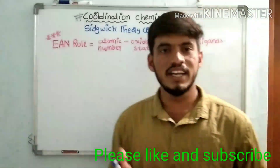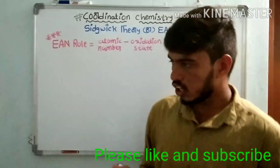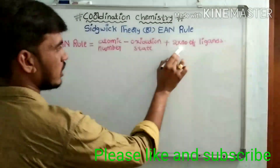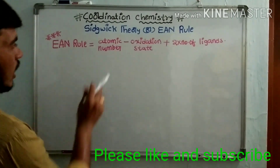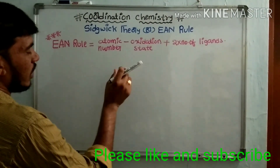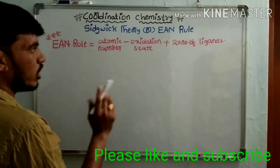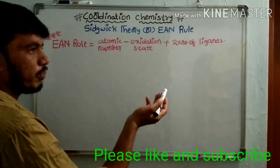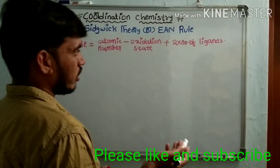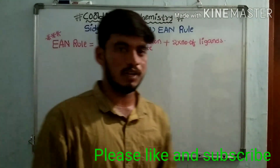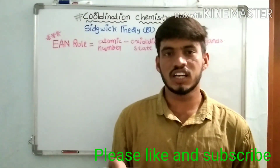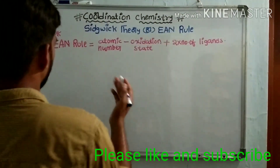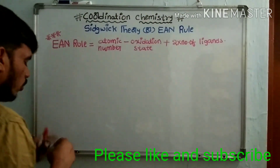Sidgwick proposed this theory in 1927. The EAN rule formula is: EAN equals atomic number minus oxidation state plus two times the number of ligands. If the EAN value of a metal complex equals the atomic number of the nearest inert gas element — like argon, krypton, or radon — the complex is more stable. This is the basic concept of the EAN rule.